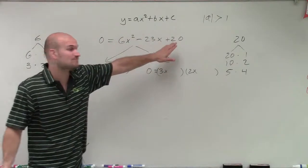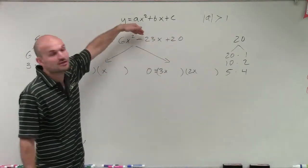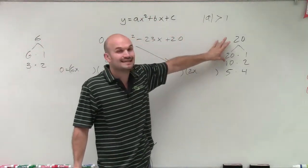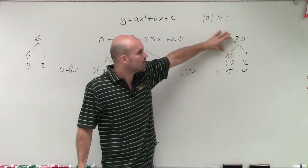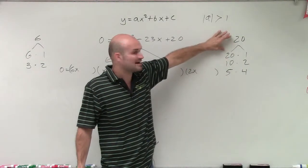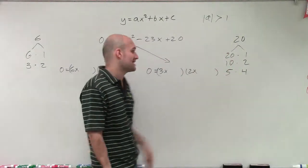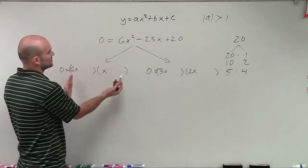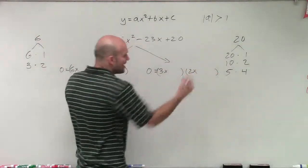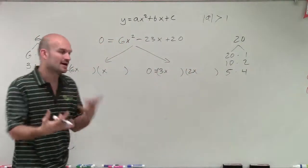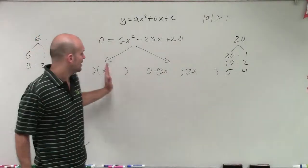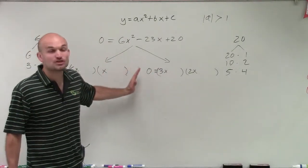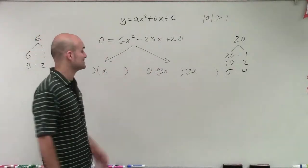We notice our last term is positive but our middle term is negative. Therefore, the factors of 20 are both going to have to be negative. You could rewrite that with your a's being negative and your 20's being positive, but I like to always keep the first terms positive.